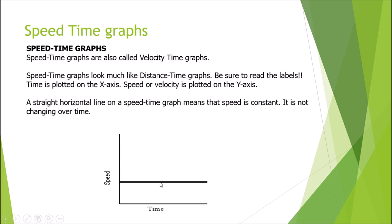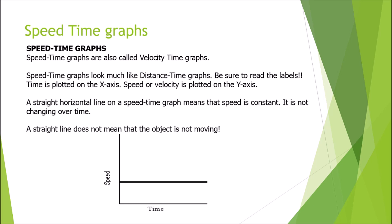A horizontal line on a speed-time graph does not mean the object is at rest — unlike in the distance-time graph. Here it means the object is moving with the same constant speed. As the interpretation changes with graph type, you cannot say the object is at rest here. A horizontal line on a speed-time graph means the object is moving with a constant speed.